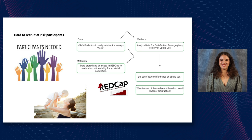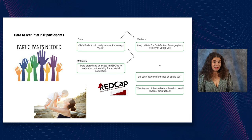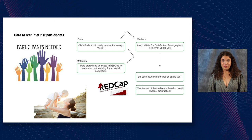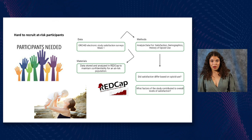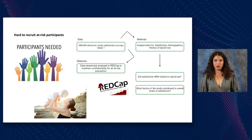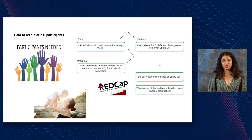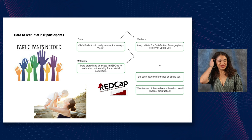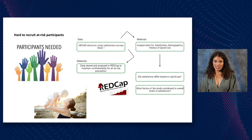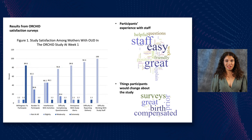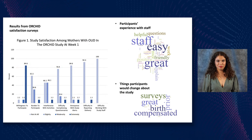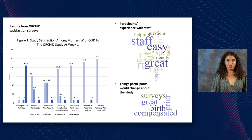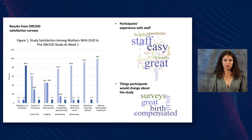Recruitment and retention of at-risk participants is extremely difficult, especially for our target population of postpartum women with opioid use disorder. Postpartum is an extremely difficult and chaotic time, making it hard for potential participants to meet the demands of a study. Furthermore, OUD and the stigma surrounding it can make it hard for participants to come forward, and as mothers with OUD there is significant fear of legal consequences such as child protective services involvement.